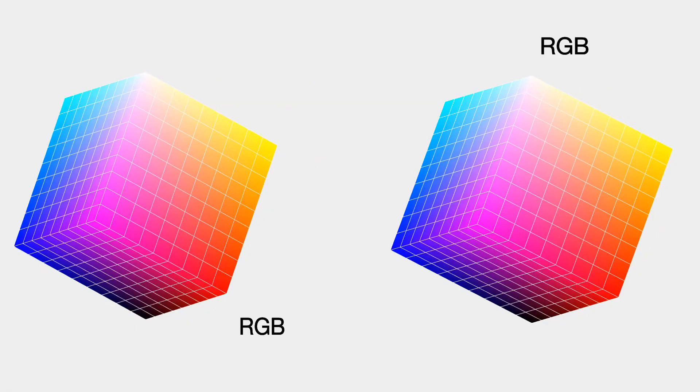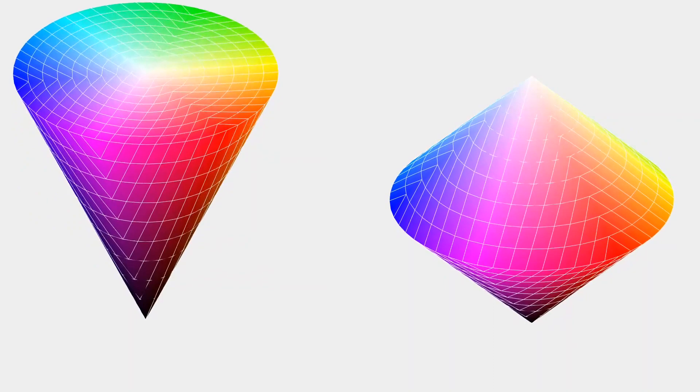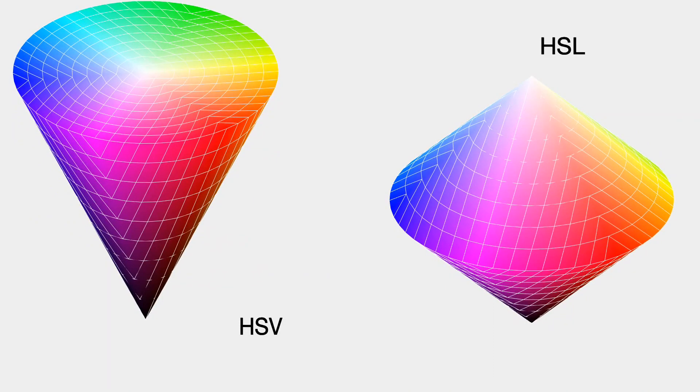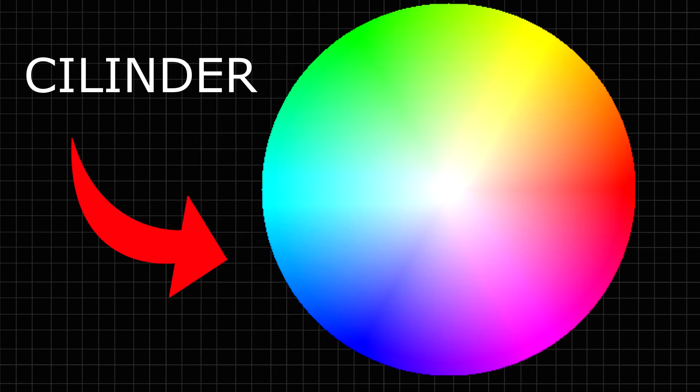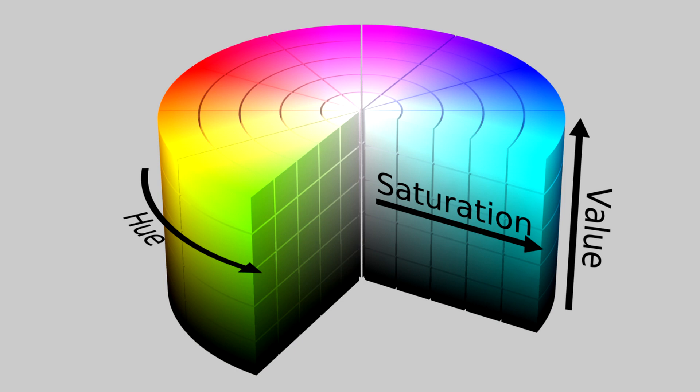They are based on the RGB color model, and they were designed in the 70s by computer graphic researchers to align with the way human vision perceives color-making attributes. And the original design was, as well as Munsell's, 3D. This color wheel we see here was originally a cylinder. That's right, this is a cylinder. Basically you would read it this way: The hue is the angular dimension starting at the red primary at 0 degrees, passing through the green primary and the blue primary, wrapping back to the red. The central vertical axis has the neutral achromatic colors from white to black, creating the saturation and lightness dimensions.